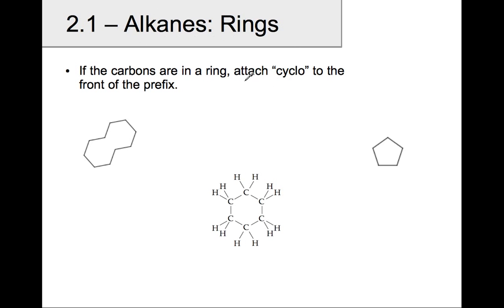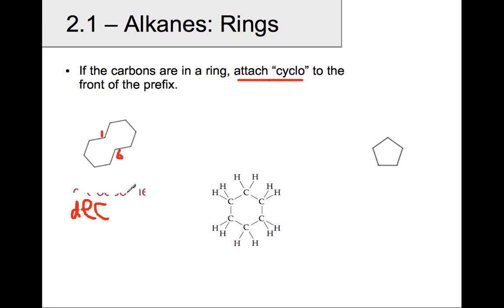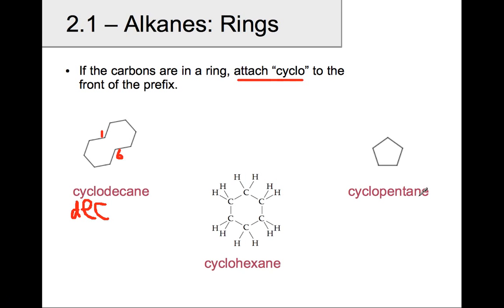Rings are going to be slightly different because you're going to attach cyclo in front of the prefix. Here we have carbon 1, 2, 3, 4, 5, 6, 7, 8, 9, 10 — this is 10 carbons in one ring. The prefix for 10 carbons was dec, D-E-C, and so we'll make it cyclodecane. Here we have 1, 2, 3, 4, 5, 6 carbons in a ring, so it is cyclohexane, hex being the prefix for 6. And this is a ring of 5 carbons — pent — that's cyclopentane. Pretty easy.